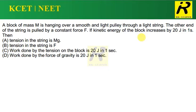Welcome to the channel RIK Learner for KCET. A block of mass M is hanging over a smooth and light pulley through a light string. The other end of the string is pulled by a constant force F. If the kinetic energy of the block increases by 20 Joules in one second, then we are having four options.